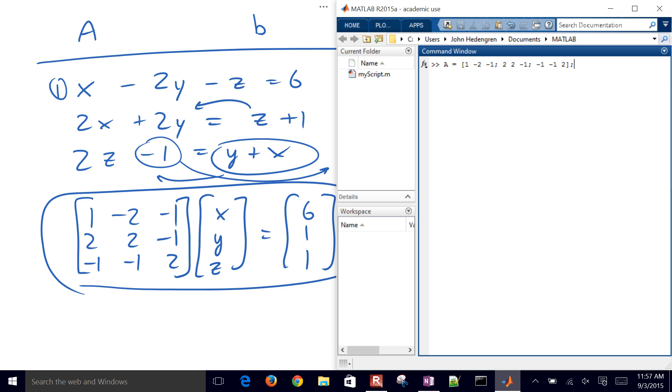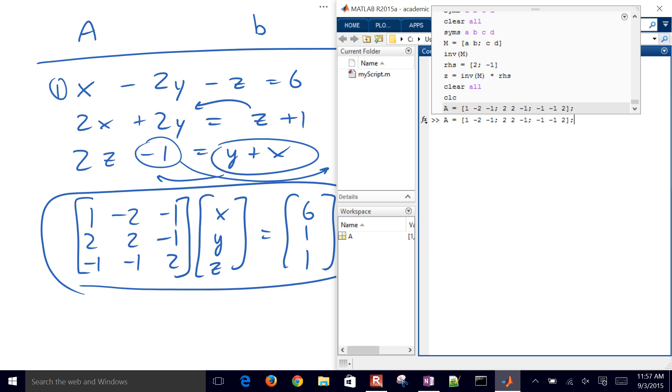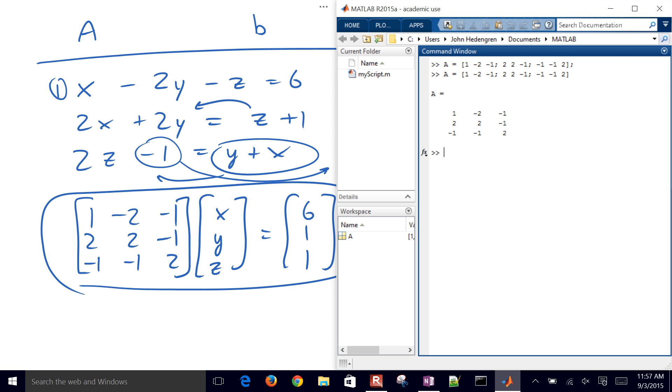And if I put a semicolon after it, it suppresses the output, so I don't see the result of that. But if I take away the semicolon, then it'll show me my A matrix, and I can verify that it's correct. So B is going to be 6, 1, and 1.